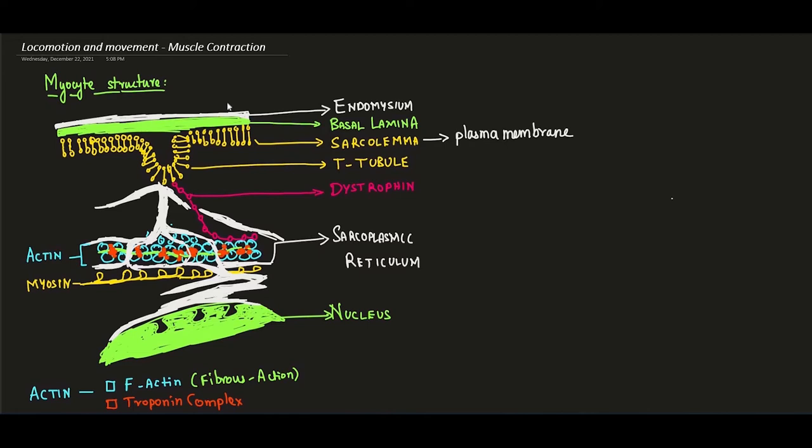The sarcolemma will form a tube-like structure called T-tubules. Nerve fibers connect to myocytes, and the nerve impulse travels directly through the T-tubules, which are extensions of the plasma membrane into the muscle cell.